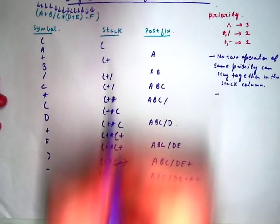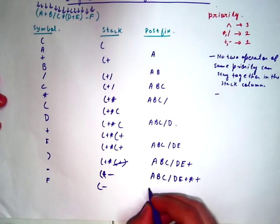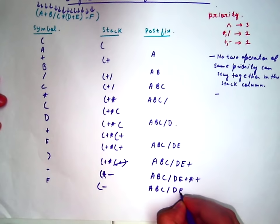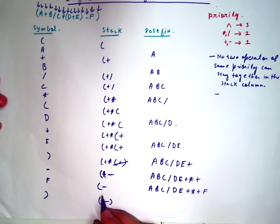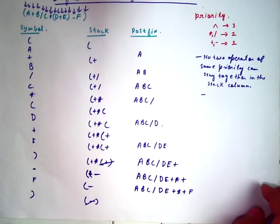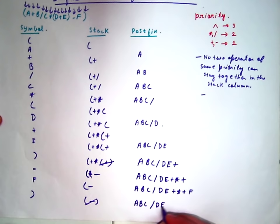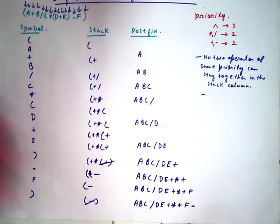Next character is F. The stack will remain same and F would be added to the postfix column. The last is the closing braces. As I said earlier, whenever a closing braces comes, pop out whichever operator is in there and add it to the postfix column. So your final postfix expression is this.